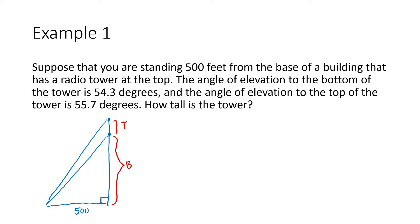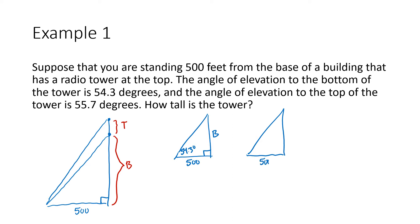We have two separate triangles. One triangle has a 54.3 degree angle looking up at the top of the building (bottom of the tower), with a base distance of 500. A slightly larger triangle still has 500 at the bottom, a 55.7 degree angle, and the vertical side is the height of the building plus the height of the tower, B plus T. Our trigonometric functions apply to both triangles separately to help us find T.